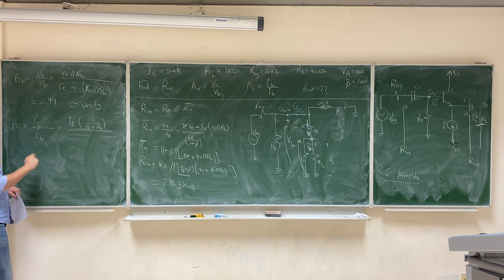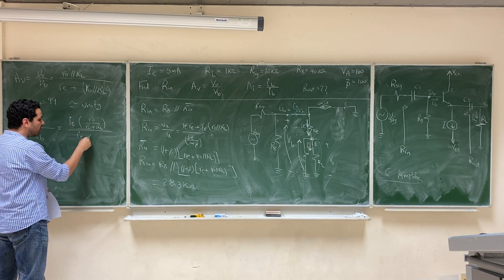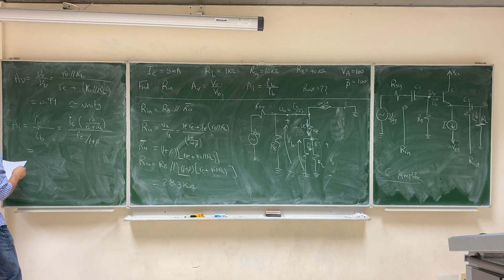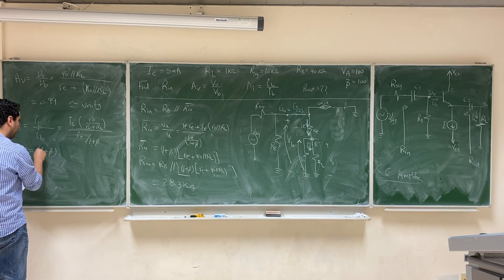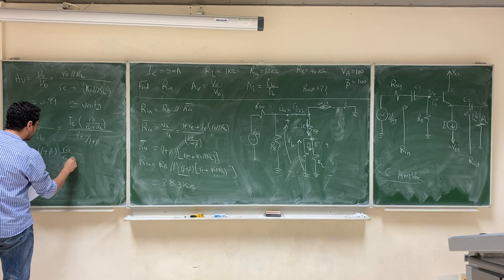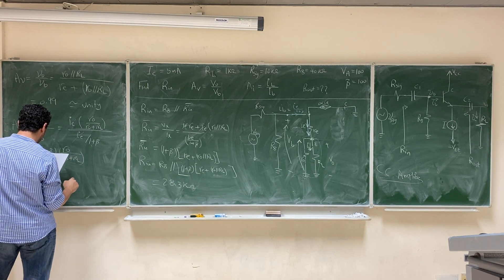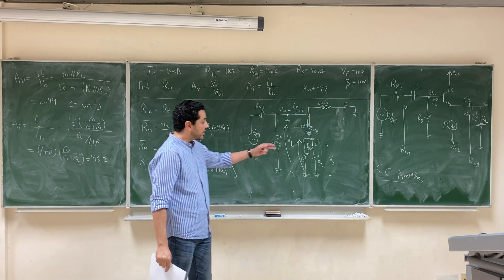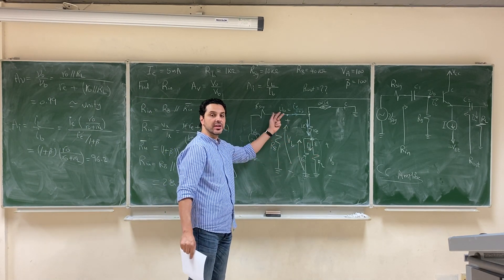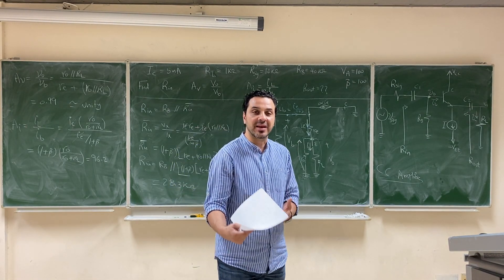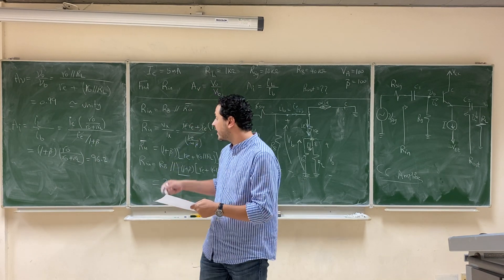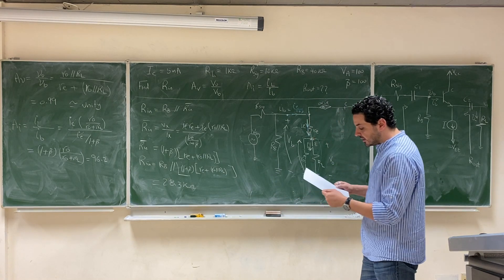Over I-base: the relation between I-base and IE is I-base equals IE over (1+beta). So IE cancels from the equation, and the current gain equals (1+beta) multiplied by RO over (RO + RL), which is approximately 96.2. The current gain is high because a small change in base current gives a large change in emitter current — that's why the current gain here is in the range of 96.2.